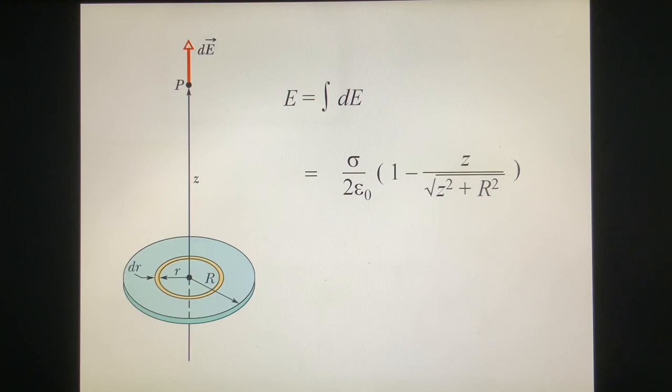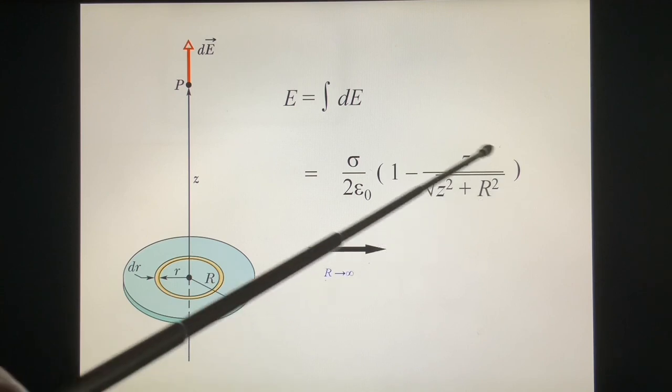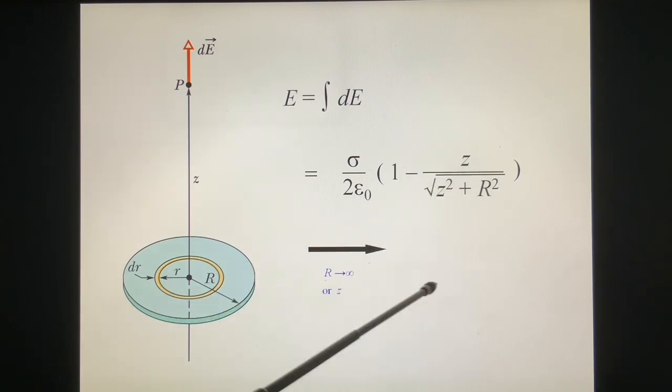Now, let's look at the extreme situation. Suppose the R approach the infinity. This means this disk becomes an infinite plane with the uniform charge density σ. In this case, R approaches infinity. So this term becomes zero.